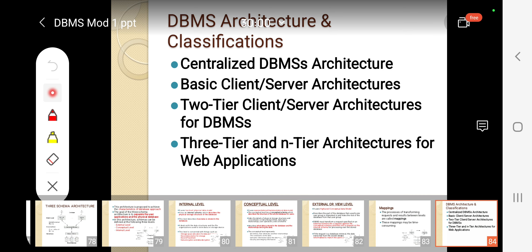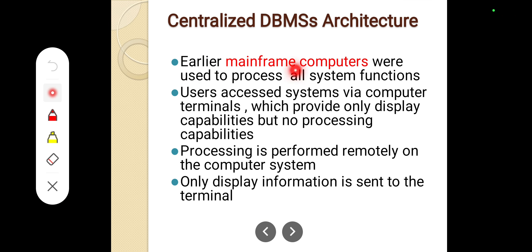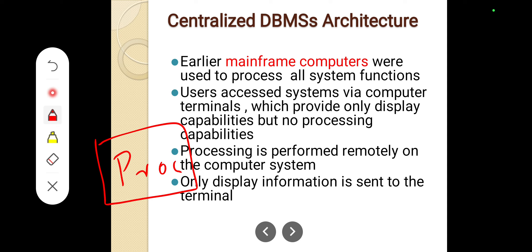In the centralized DBMS architecture, earlier mainframe computers were used to process all the system functions. The users access the system through computer terminals which provide only the display capability. All the processing is done by the central mainframe system. This processor will be connected to many display terminals.